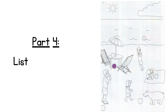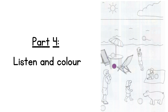Part four. Look at the picture, listen and look. There is one example. Hello, Nick. Colour this picture with me. OK. Can I colour one of the balls? Yes. Colour the ball under the table — colour it purple. Right. The ball under the table is purple. Can you see the purple ball under the table? This is an example. Now you listen and colour.